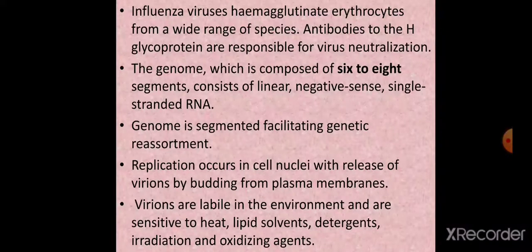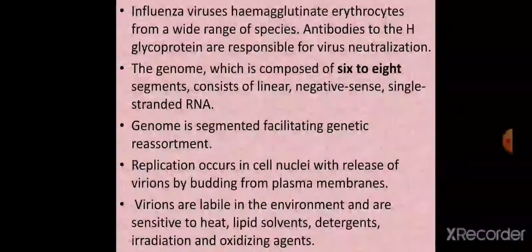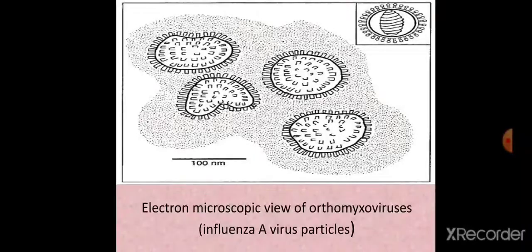Replication occurs in the cell nuclei, with release of virions by budding from the plasma membranes. Virions of orthomyxoviruses are labile in the environment compared to paramyxoviruses, which are comparatively more stable. Virions are sensitive to heat, lipid solvents, detergents, irradiation, and oxidizing agents.